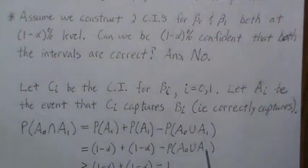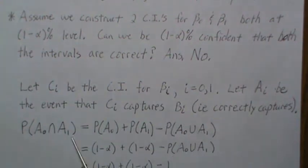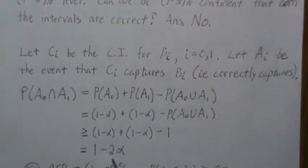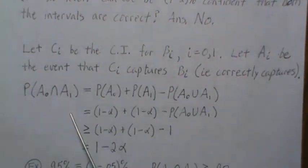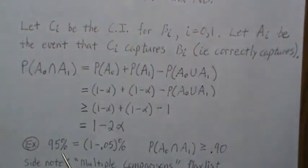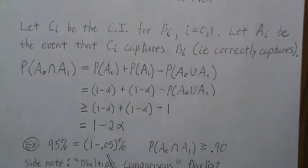We don't know the relationship between these two events, so let's take a worst case scenario. Since we want the probability as large as possible, the worst case would be if P(A₀∪A₁) was one. Then this probability can be as low as one minus two alpha. As a quick example, if we conduct both tests at the 95% level, the probability that both intervals are correct is at least 90%. So we can't guarantee that we maintain a type one error rate at the 95% level.